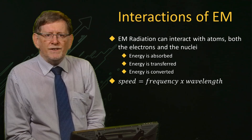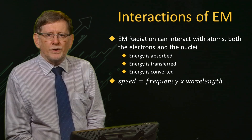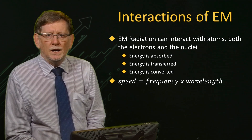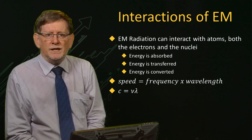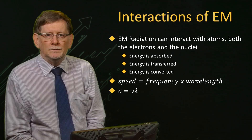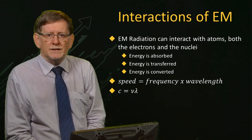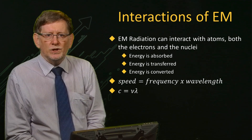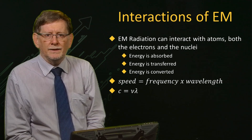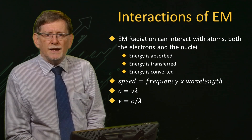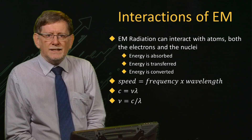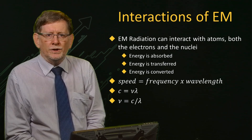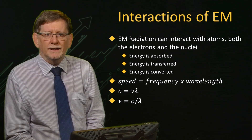The speed of any wave is the product of its frequency and wavelength. For EM radiation, the equation becomes C equals nu times lambda. Alternatively, we can say that frequency is inversely proportional to wavelength, meaning that as the frequency gets higher, the wavelength gets shorter. In the next exercise, you will investigate further the relationship between frequency and wavelength.